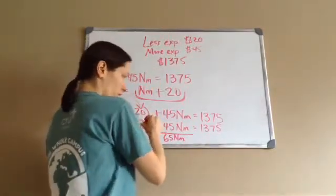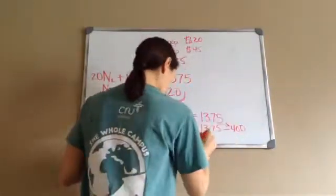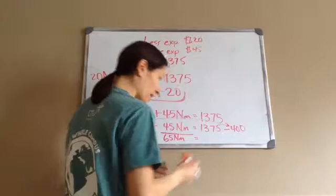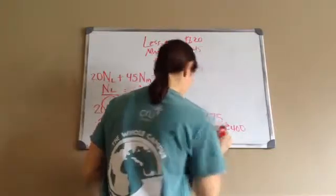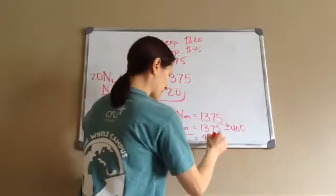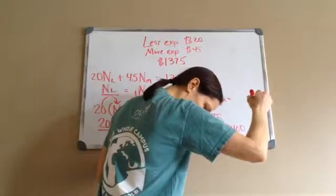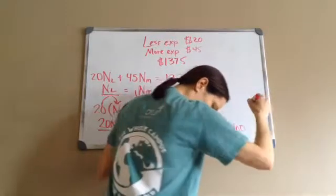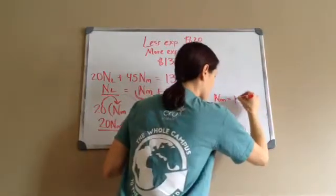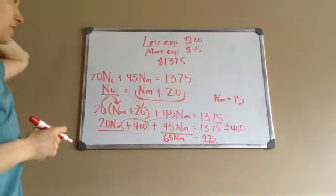And then this plus 400, I'm going to move across and make it minus 400. Then I get 65 equals 975 when I subtract that. And then 65 times NM, I'm going to divide by 65. So then NM equals 15. So now we answer for the number of the more expensive is 15.